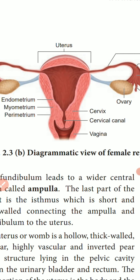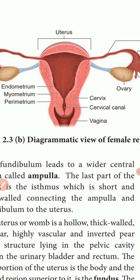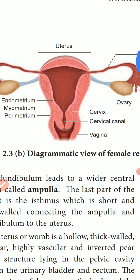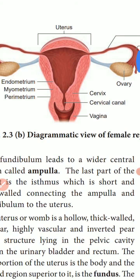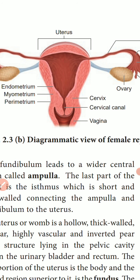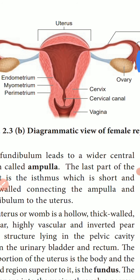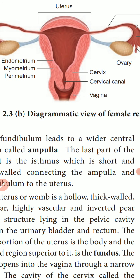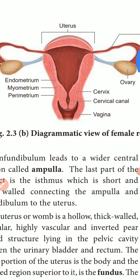Menstruation occurs only if the released ovum is not fertilized. If fertilization does not occur, menstruation will take place. Therefore, the absence of menstruation may be an indicator of pregnancy. However, it could also be due to stress, hormonal disorder, or anemia. So this concludes the menstrual phase.